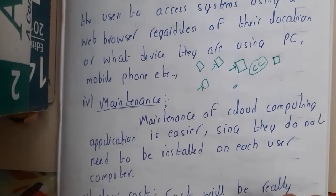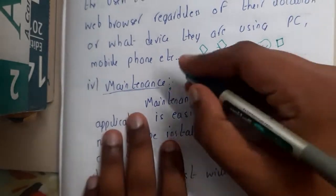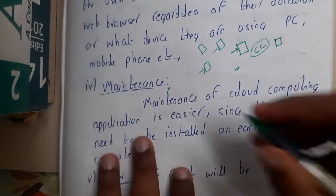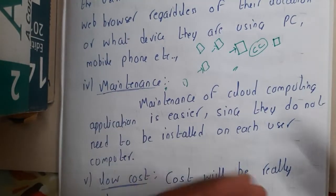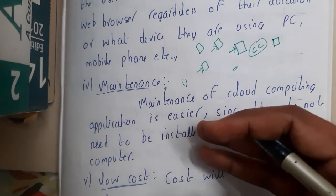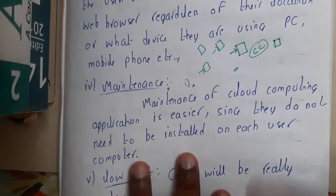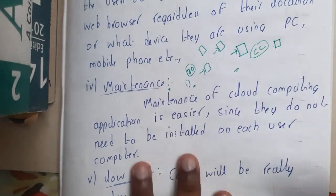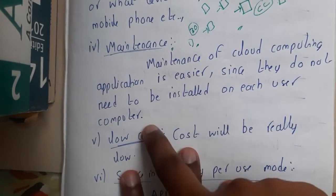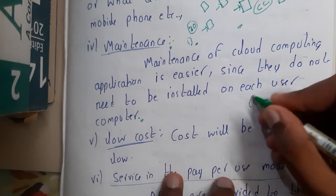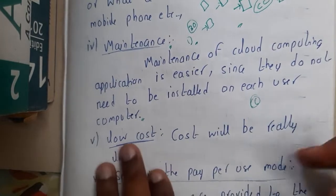Maintenance is also a major advantage. Most of the maintenance of your servers and everything will be taken care of by the providers. Assume you took some space in Google Drive — you are not checking anything, managing anything, or maintaining anything. You just store your files and come back whenever you need them. All the maintenance work — cleaning, recycle bin emptied every 30 days — they manage it. Also, maintenance of cloud computing applications is easy since they do not need to be installed on each user's device, as everything runs online.